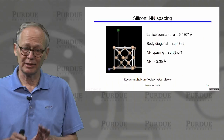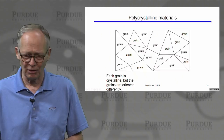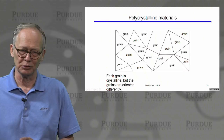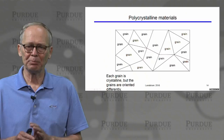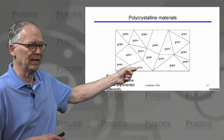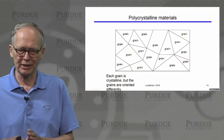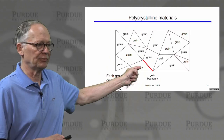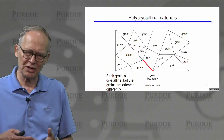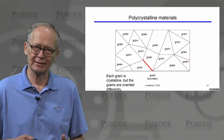I encourage you to look at the homework assignment and try these calculations. Now, what is a polycrystalline material? It's a material consisting of many crystals oriented in different directions so that things don't line up at the boundaries. The boundaries between different orientations are called grain boundaries. At a grain boundary, atoms don't match up well, making grain boundaries a source of many defects. These defects affect and generally degrade the electronic performance of the material.